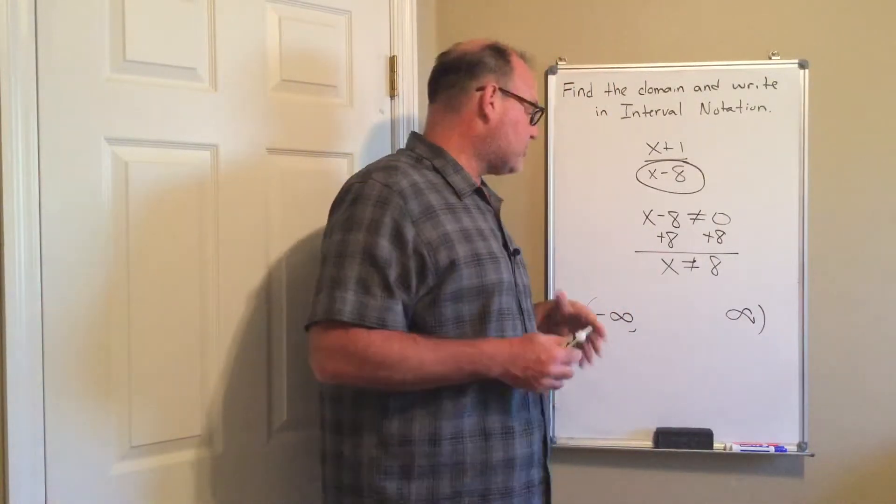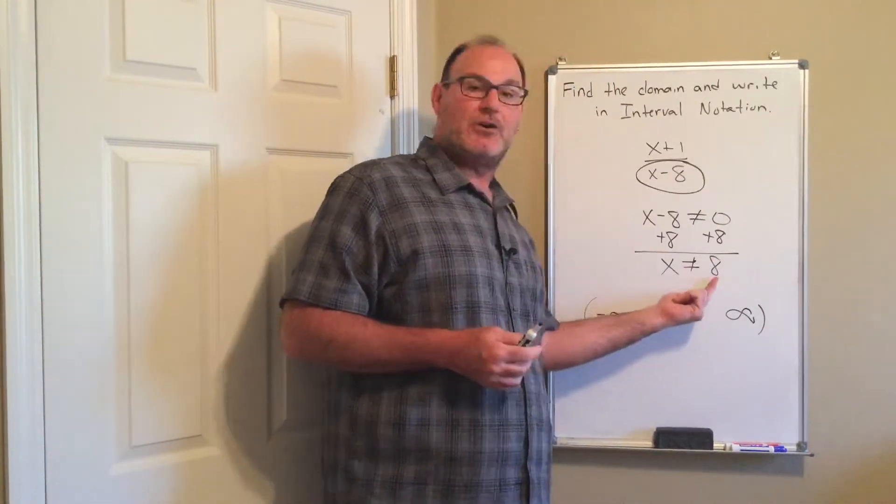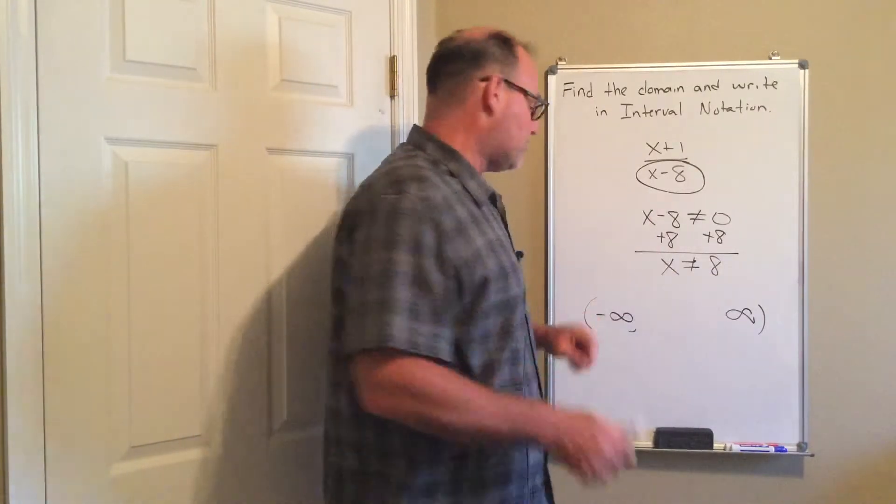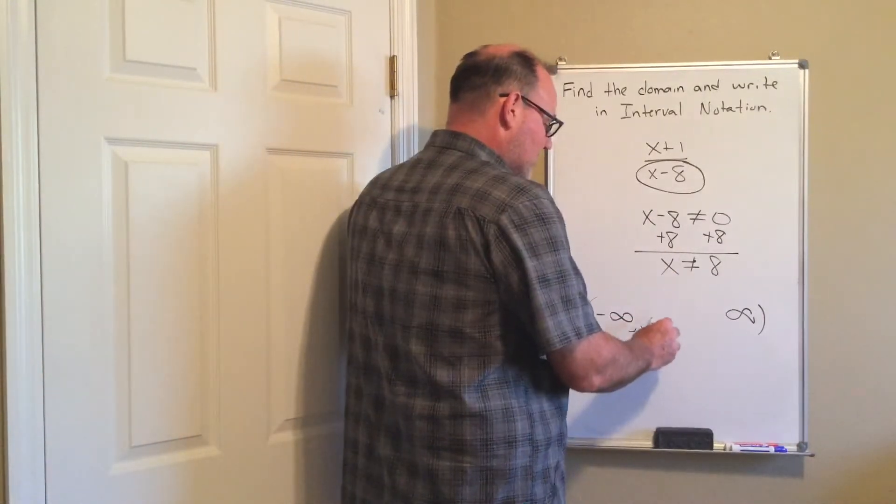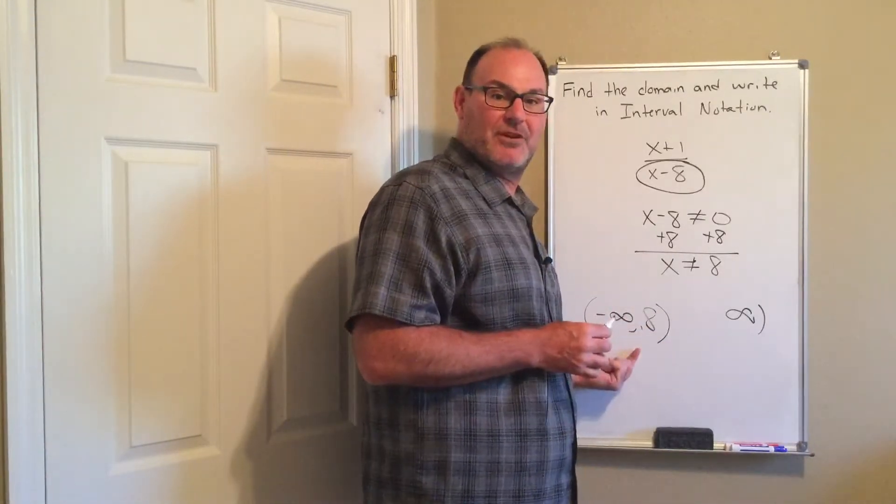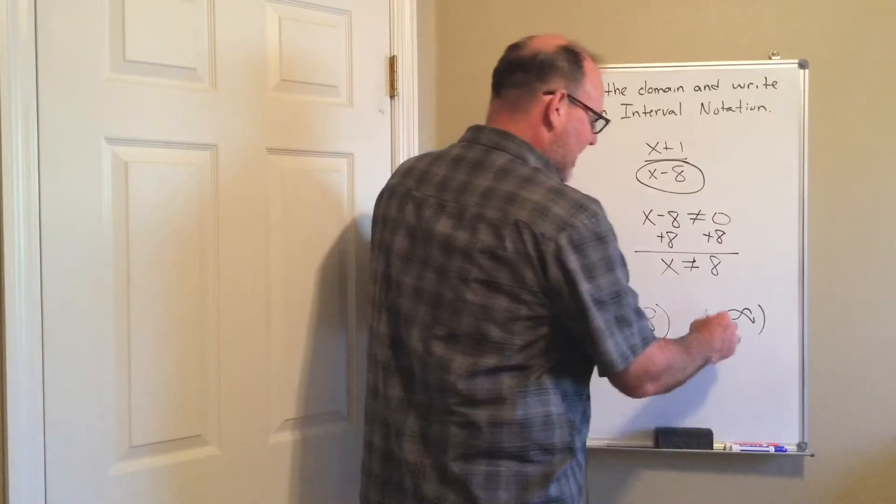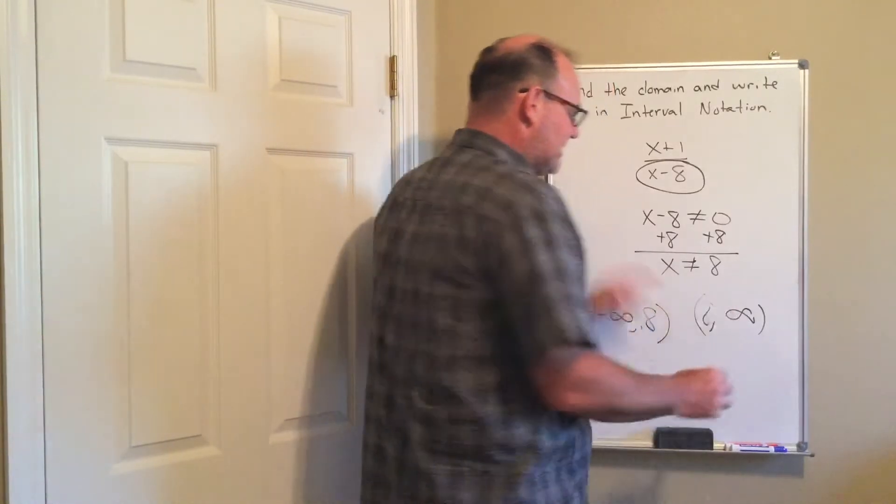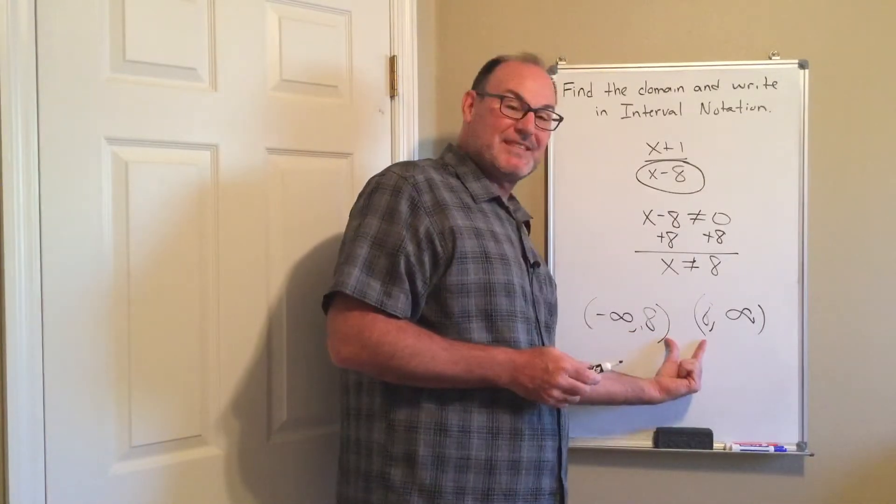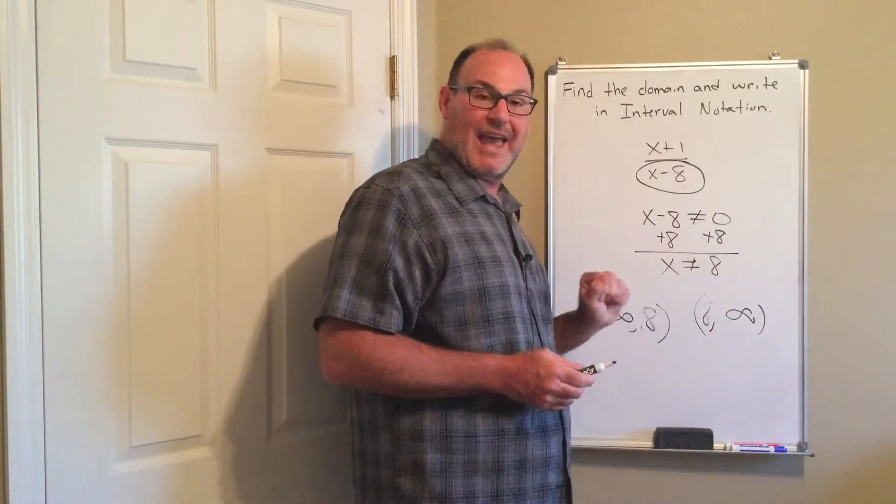But now we have to jump over the value 8 because it's not part of this set. So what you do is say okay, I can do all the numbers that are less than 8, so everything to the left of 8 on the number line, and then I can do everything that is bigger than 8 on the number line. Notice I'm using parentheses here because x cannot be equal to 8.